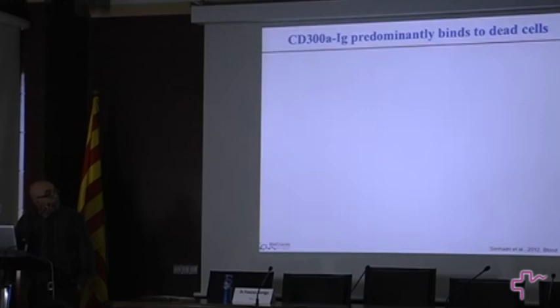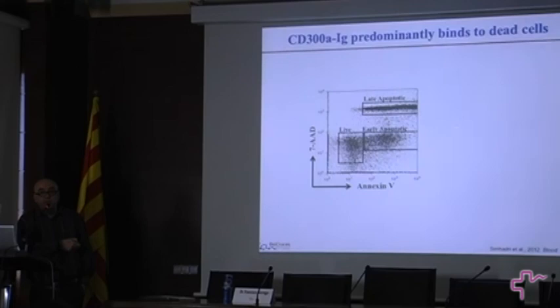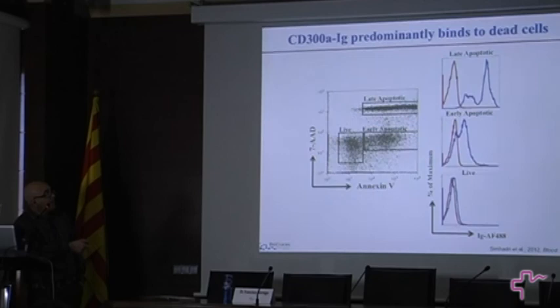If we stain PBMCs using annexin V and 7-AAD, we can distinguish three subsets: live cells, early apoptotic cells, or late apoptotic cells where the plasma membrane is compromised. He showed again that live cells do not bind the protein, and clearly what he showed is that late apoptotic cells, but also early apoptotic cells, bind CD300A.